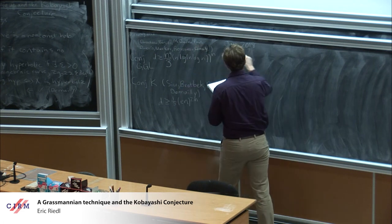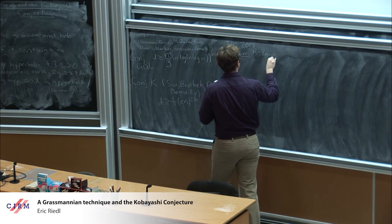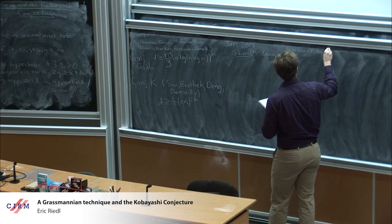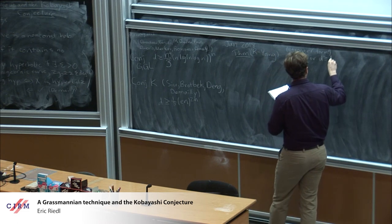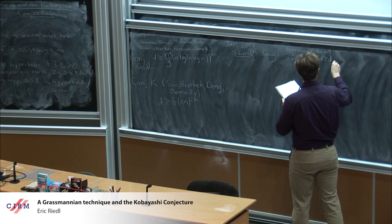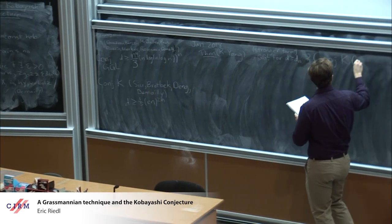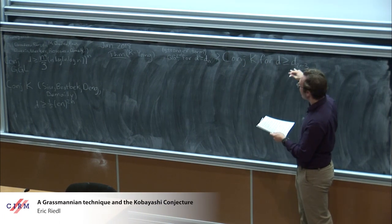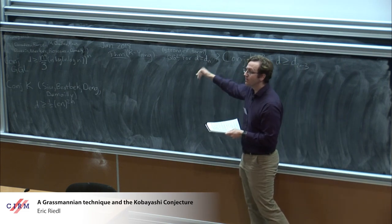In June of 2018, David Yang and I proved a slightly stronger form of the Green-Griffiths-Lang conjecture for D at least D_{2n}, which implies the Kobayashi conjecture for D at least D_{2n-3}. So roughly, if you halve the dimension and you know the Green-Griffiths-Lang conjecture, then you can get the Kobayashi conjecture.